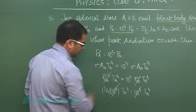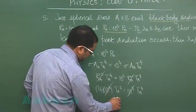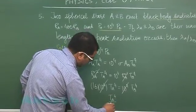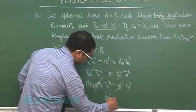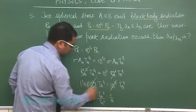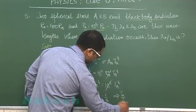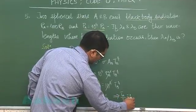This and this would get cancelled and what I will be getting now is T_A to the 4 by T_B to the 4 is 1 by 16, and this finally leads T_A by T_B is 1 by 2.